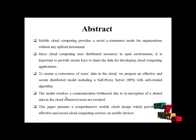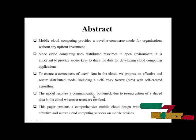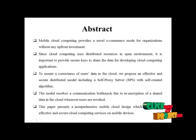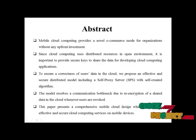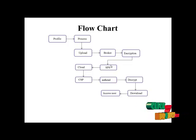The data is over-encrypted as re-encryption will be performed — it's called proxy re-encryption — and the data is stored in the self-proxy server. The model resolves communication bottlenecks due to data re-encryption of shared data in the cloud whenever users are revoked. The paper presents a comprehensive mobile cloud design model providing effective and secure cloud computing services on mobile devices. This is our flow diagram for the self-proxy re-encryption.